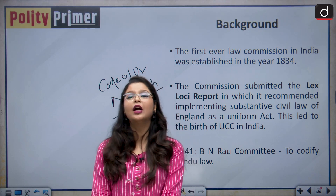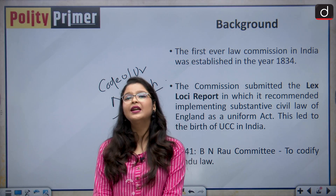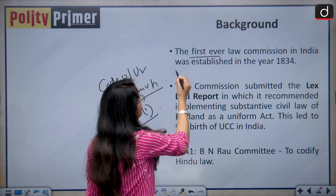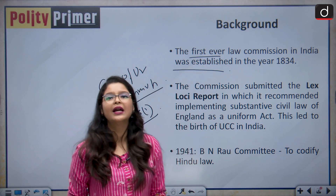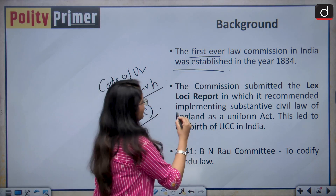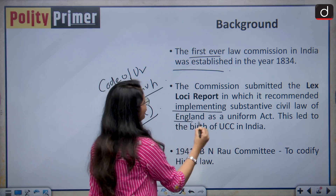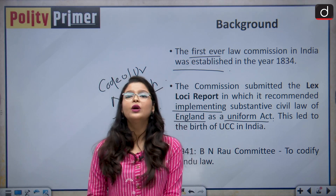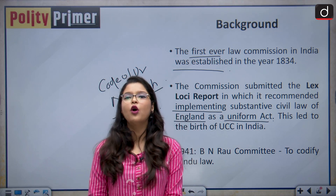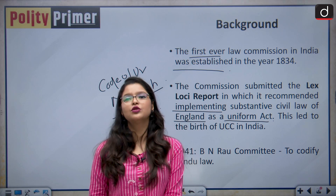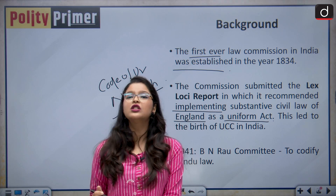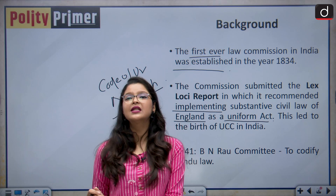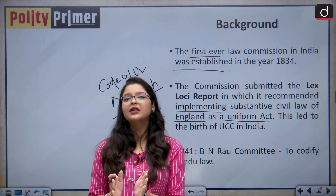If you talk about India and how UCC came to India, let me take you back to the year 1834. In 1834, the first ever law commission was established and it submitted a lex loci report. It recommended the implementation of substantive civil law of England as a uniform act and this was the beginning of uniform civil code in India. In 1948 when the Constituent Assembly was formed to discuss and frame the Indian constitution, this topic of uniform civil code was hugely debated on the floor of the Constituent Assembly, but they could not reach a common consensus because the members differed from each other.